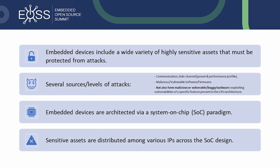It could be at communication or connectivity level, also by exploiting the power and performance profiles known as side-channel attacks. It could also be from malicious or vulnerable software or firmware subject to memory corruption attacks, or from a buggy hardware block. If we take the CPU as an example, this includes exploiting specific architectural features such as speculative execution, known for optimizing CPU speed — here we call these Spectre and Meltdown vulnerabilities.